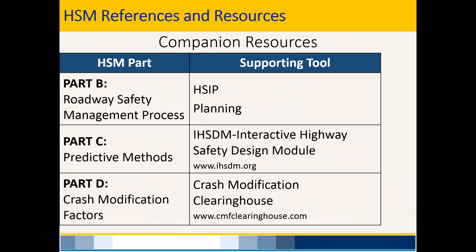Part B is heavily used by planning and HSIP. For Part C, you may have heard of the Interactive Highway Safety Design Module, or IHSDM — software that lets you load roadway models and get an analysis based on the roadway characteristics you've chosen. We also have the Crash Modification Clearinghouse, which is a warehouse of crash modification factors for different treatments.